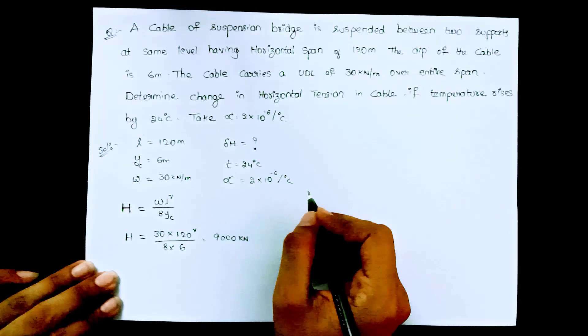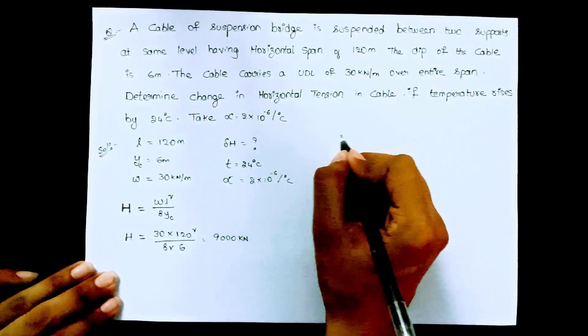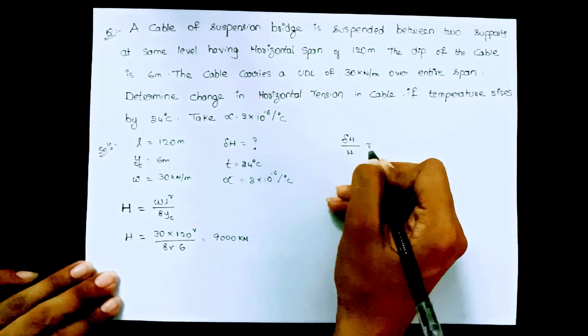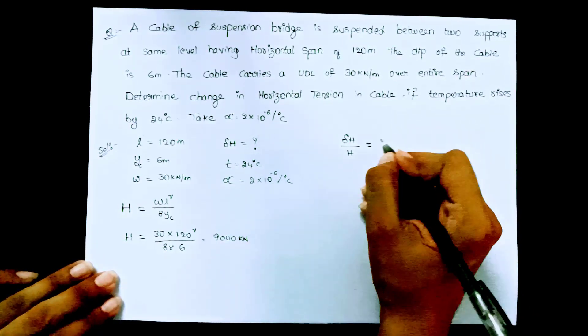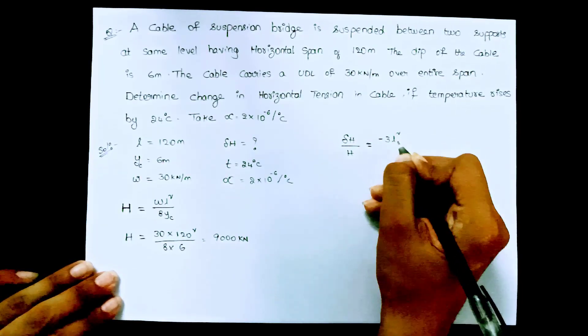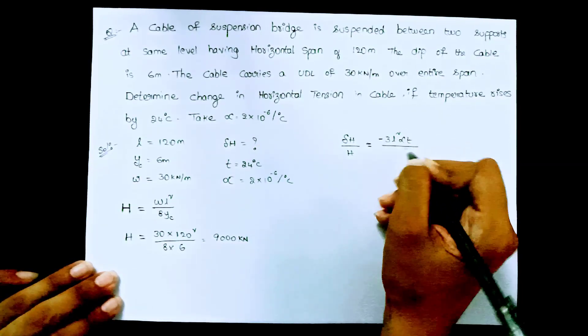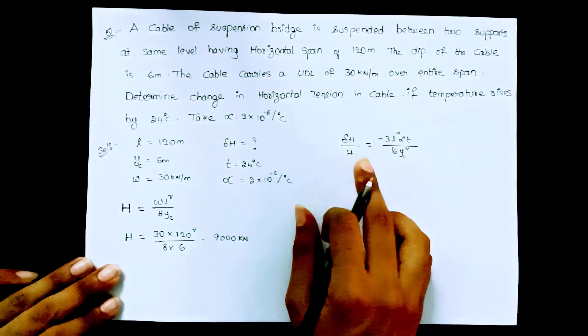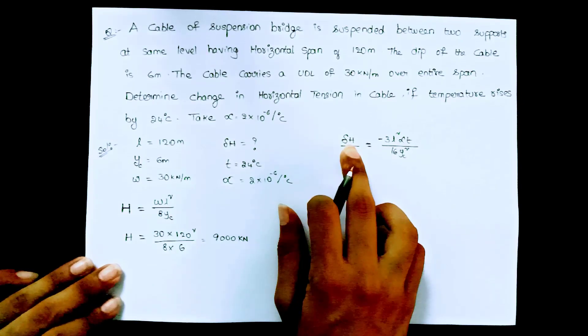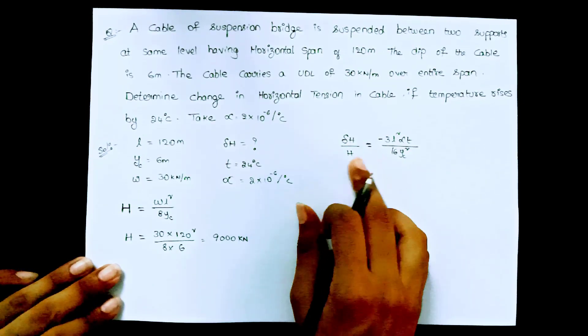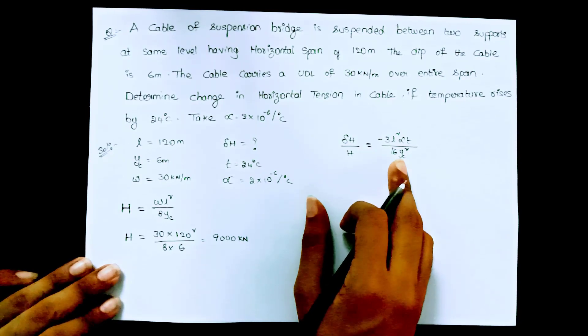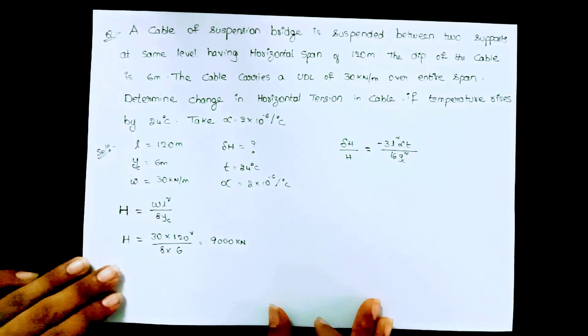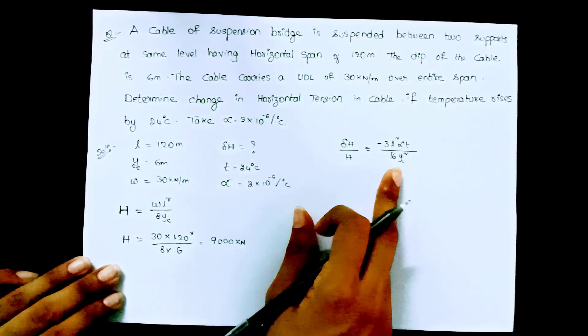Now we have to calculate the change in horizontal tension. So I am doing here change in horizontal tension that means delta h divided by h. There is one formula. This formula is minus 3 into l square into alpha t by 16 yc square. This is the formula to calculate the change in horizontal tension. This formula is derived in the recent videos. If you haven't watched that video that link is also given in the description, you can follow those links and you can know the derivation of this formula.